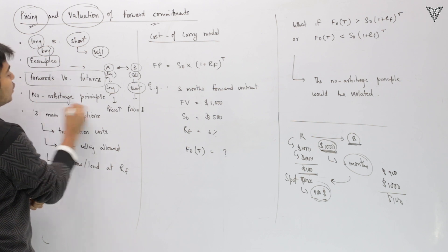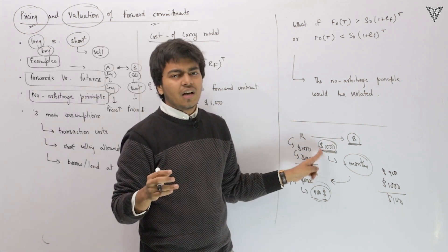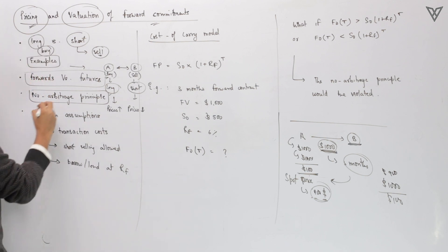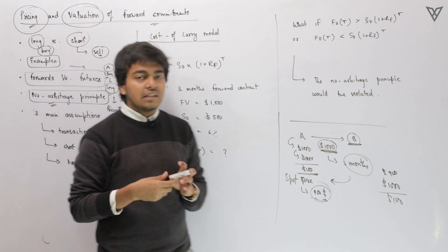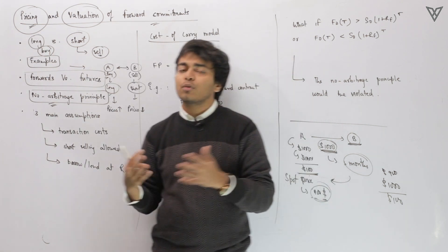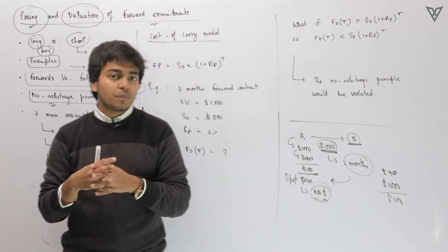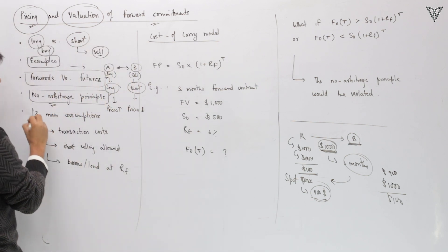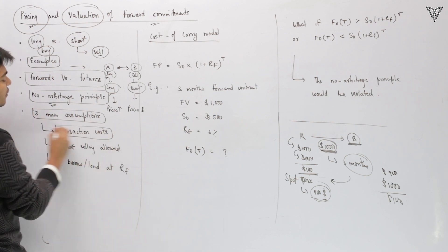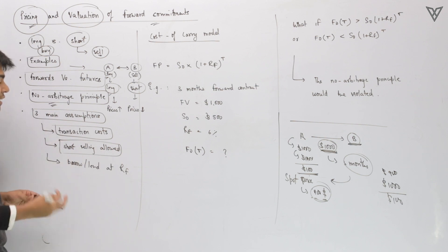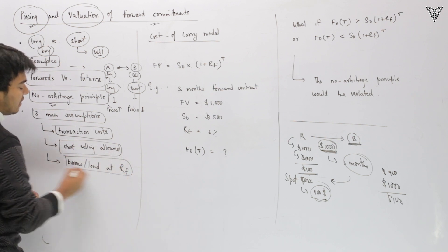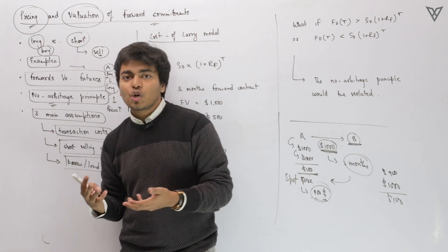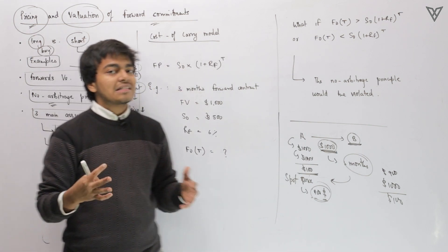We know the pricing of a forward contract. How do you exactly calculate the forward price? It is based on a no-arbitrage principle — at initiation you should not be able to make any profit or loss, and the value of the contract should be zero for either party. The formula is: forward price equals spot price multiplied by (1 + rf)^T. There are three main assumptions: no transaction costs, no prohibition on short selling, and you can borrow or lend unlimited at the risk-free rate.